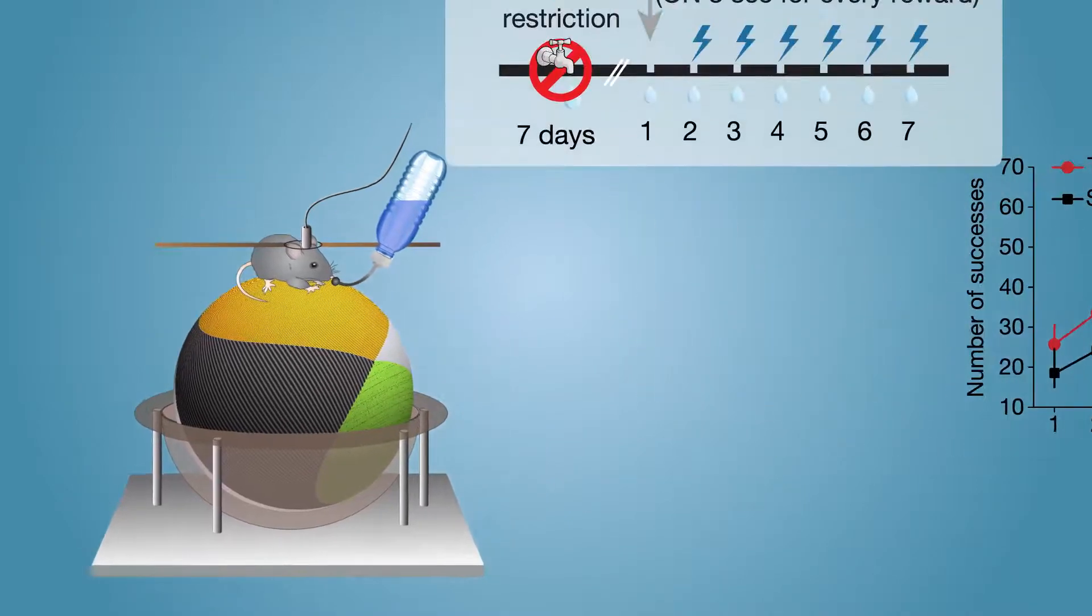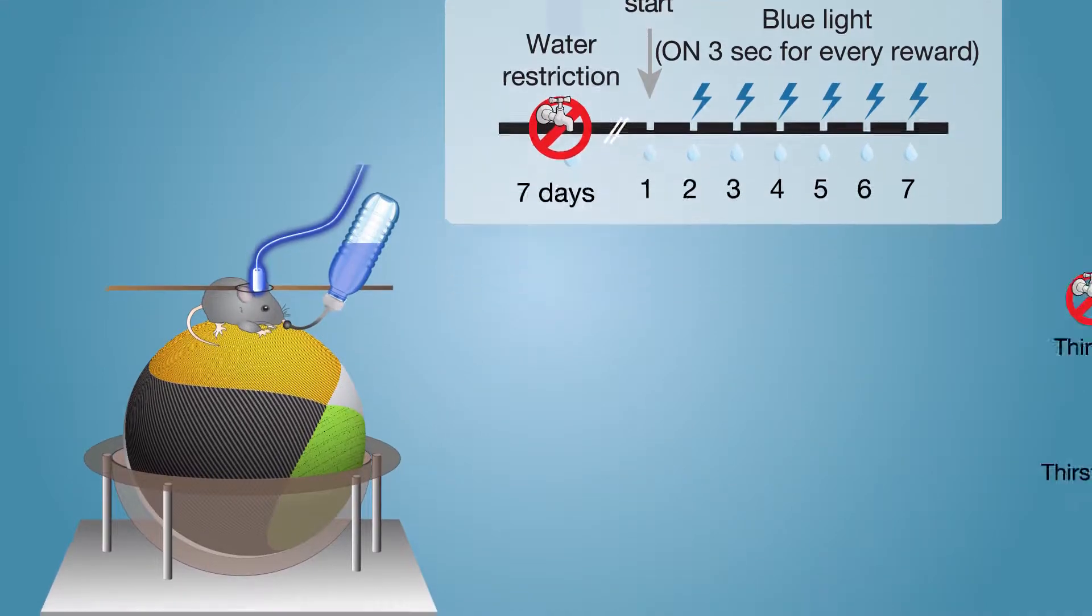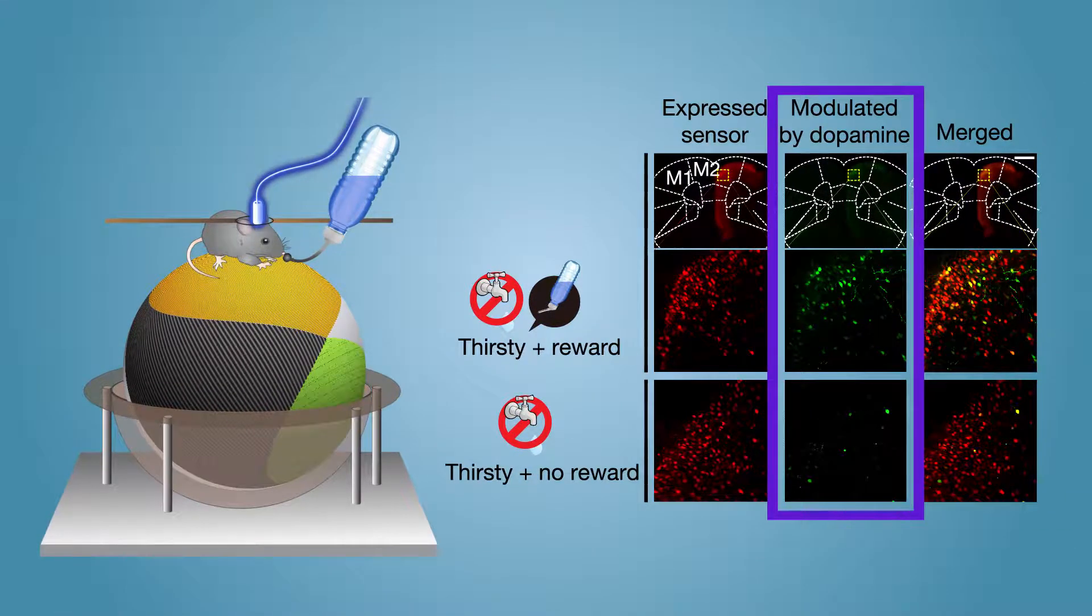So when the researchers paired blue light with water delivery during learning, they could see the cells that transformed the dopamine reward signal into puzzle-solving behavior because they expressed the marker.